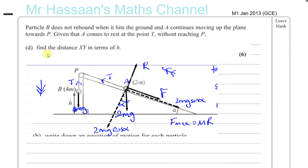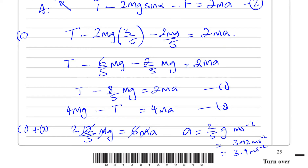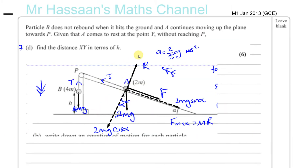Okay, question number seven part D. We've done parts A, B and C and found that the acceleration of the system was two over five g meters per second squared, which was three point nine two. So it's accelerating this way.